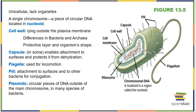Your typical prokaryote is unicellular and lacks organelles. They have one single chromosome — a really long piece of DNA kept packaged in an area called the nucleoid, which is not surrounded by a protective membrane. Many have cell walls outside their plasma membrane that provide protection and shape. Some have capsules that allow them to attach to surfaces and provide added protection from dehydration. Flagella are used for locomotion. Pili are attachment structures that can also build bridges between bacteria for conjugation — the sharing of genetic information.